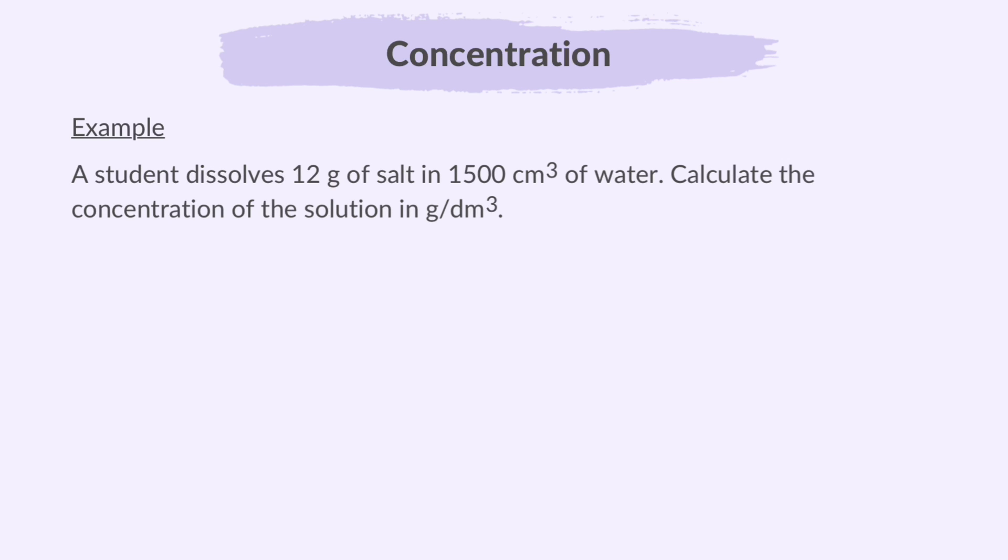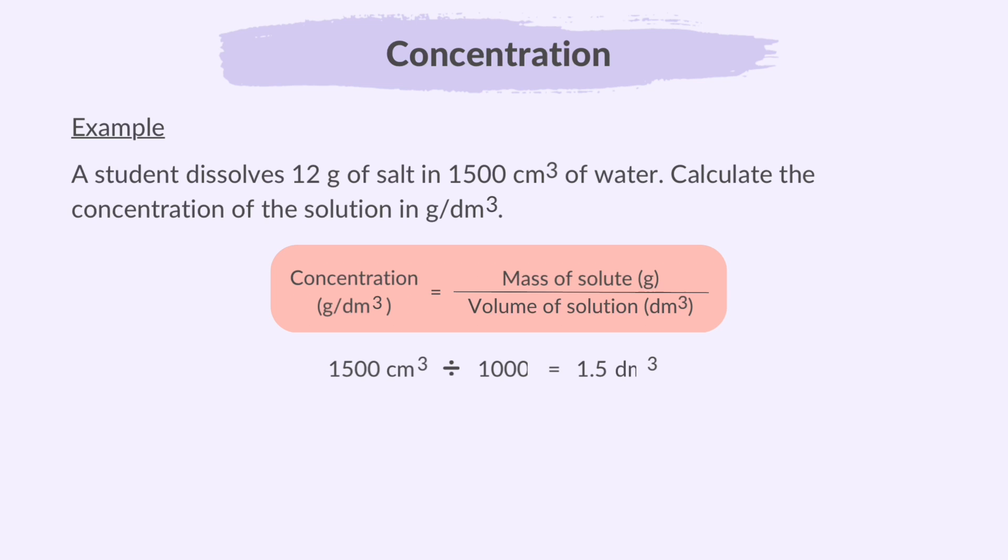Example, a student dissolves 12 grams of salt in 1500 cubic centimeters of water. Calculate the concentration of the solution in grams per dm cubed. Now, if you've noticed, the volume of the solution is given in cubic centimeters. So, first we have to convert that to cubic decimeters and to do that we divide it by 1000. Now, we can apply the mass of solute and volume of solution to the concentration formula. That will be 12 divided by 1.5 to give 8 grams per dm cubed.